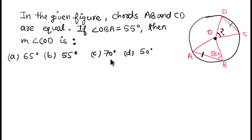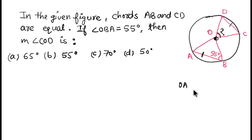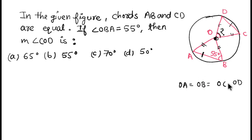The options given are 65 degrees, 55 degrees, 70 degrees, and 50 degrees. To find angle COD, we first note that this is a circle. A key property is that all radii of any circle are equal. From the figure, OA, OB, OC, and OD are all radii of the circle, so they are all equal.